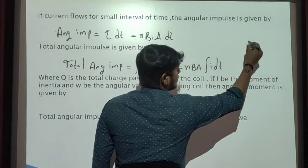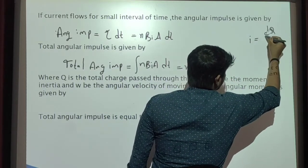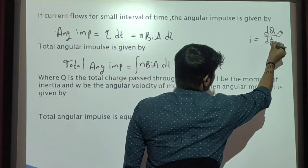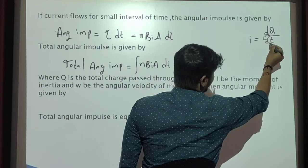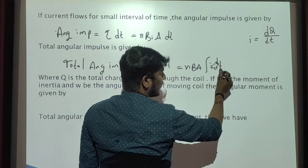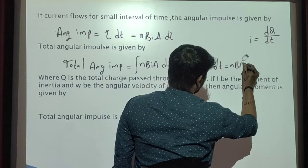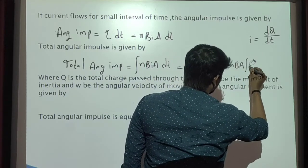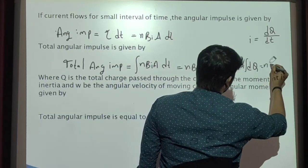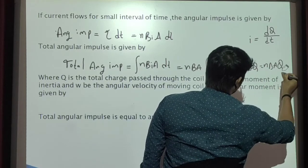We know that I equals change in charge by change in time. If you interchange this term, we will get I dt equals dq. So if you substitute the I dt value here, we will get N into B into A into the integral of dq, which equals N into B into A into q.